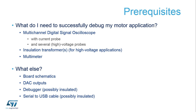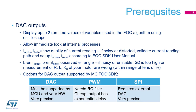We also need schematics, DAC output from our application, debug capability, and a USB-to-serial communication converter. Speaking about DAC outputs, these two pins provided from the STM32 are very useful when tuning our system, because they are able to show up to two runtime values of internal variables used within the FOC algorithm. The values change in real time and allow immediate observation of internal processes. Why not use standard debug functionality? The answer is simple: it's too slow for a runtime view.